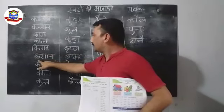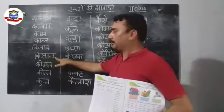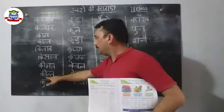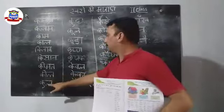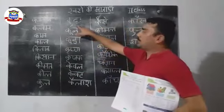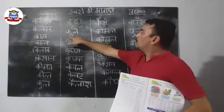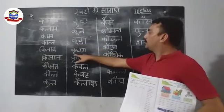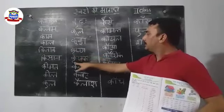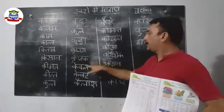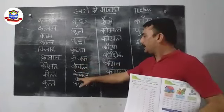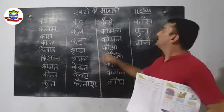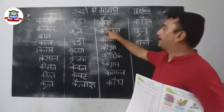Keemat, keemat; kul, kul; kuch, kuch; kool, kool; kuda, kuda; Krishna, Krishna; kisak, kisak; keewal, keewal; keewat, keewat; Kailash, Kailash; kaisi, kaisi; komal.